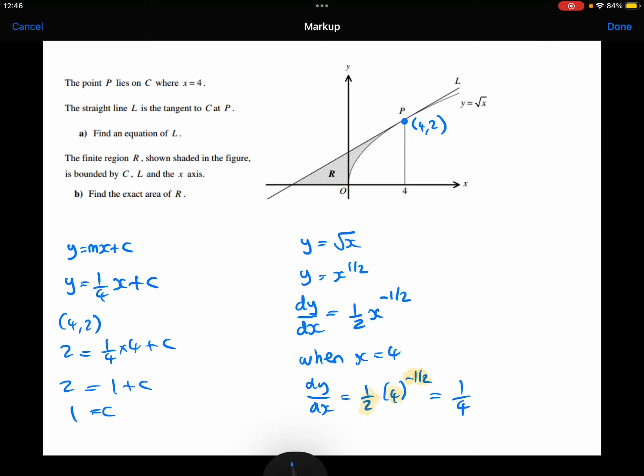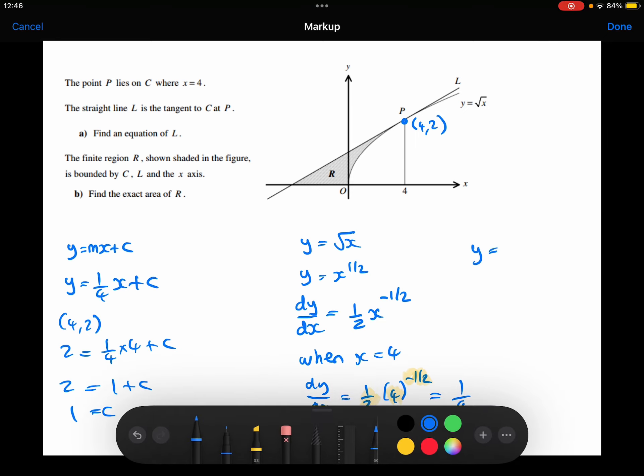Therefore, the equation of my tangent is y equals 1 quarter x plus 1. Which I could leave my answer like that, or I could times both sides by 4 to get rid of that awkward fraction.